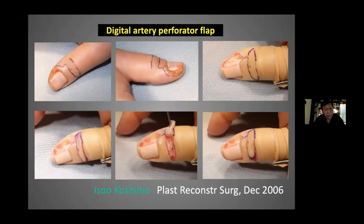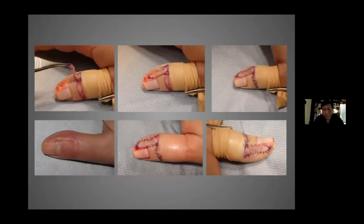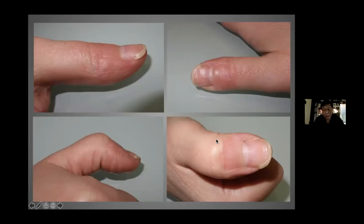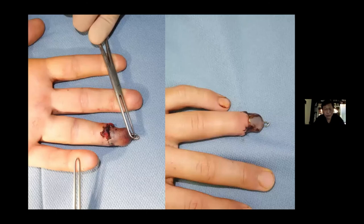Going more distally, you can base flaps on the dorsal digital arteries. As described originally by Koshima, you can use it to transpose an island flap to cover a defect on the side of the digit and even onto the pulp. You can close it directly without a skin graft, producing a very nice end result. It doesn't affect flexion of the thumb in this case.